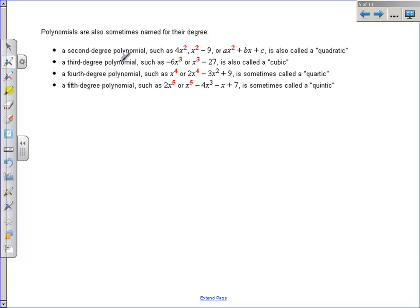Alright, polynomials are named by their degree. So the degree is what's the highest exponent you see. We have been working with quadratics with factoring. If you have a polynomial that has a degree of 2, the highest degree is 2, we're going to call that a quadratic. If a polynomial's highest degree is 3, that's called a cubic.